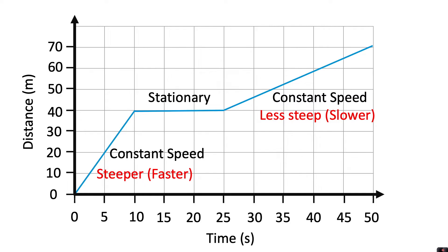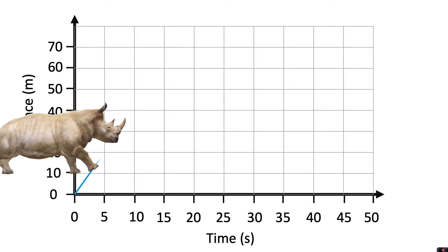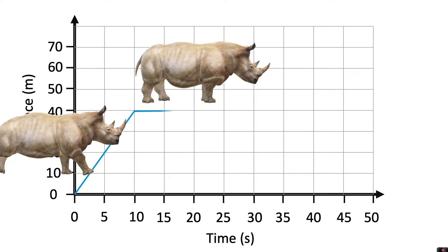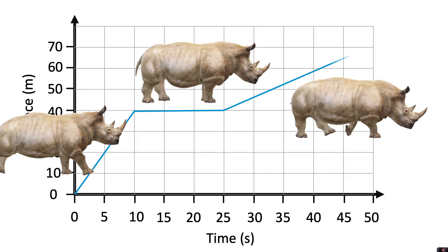For example, if we show the motion of a rhino going along this distance-time graph, we can suggest that in the first part of the graph the rhino is running fast at a constant speed. In the second part of the journey the rhino is stationary, and in the third and final part of this journey the rhino is travelling at a slower constant speed.